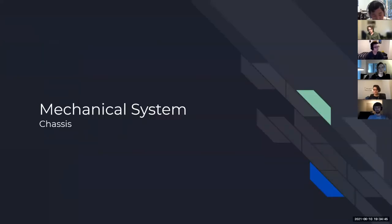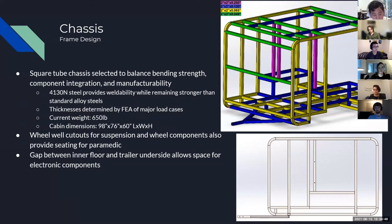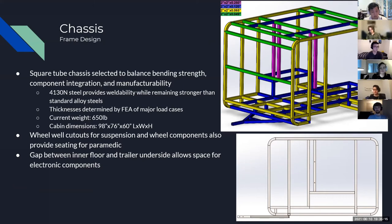For the chassis system, the main feature is a square tube chassis, selected to balance the bending strength across left and right wheels along with component integration and manufacturability. Square tubes are very easy to put together. We chose 4130 steel for its high weldability while remaining stronger than standard steels. With the specified thicknesses, we have a current chassis weight of about 650 pounds, which will hold a passenger, EMT, patient, and any medical equipment.